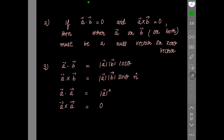Third remark: the dot product of two vectors is equal to |a||b|cosθ, and the cross product of two vectors is equal to |a||b|sinθ n̂, where n̂ is the unit vector perpendicular to the plane. Then the dot product of a vector with itself is |a|², and the cross product of the same vector with itself is equal to zero.